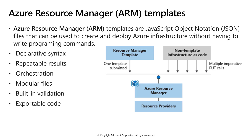Azure Resource Manager also makes it easy for you to manage and visualize resources in your app. You no longer have to deploy parts of your app separately and then manually stitch them together. You put resources with a common lifecycle into a resource group that can be deployed or deleted with a single action. You can see which resources are linked by dependency. You can apply tags to resources to categorize them for management tasks, such as billing.